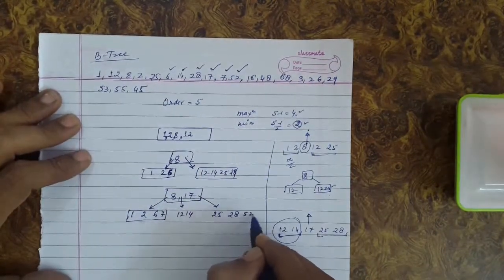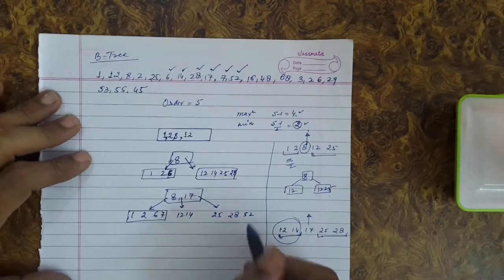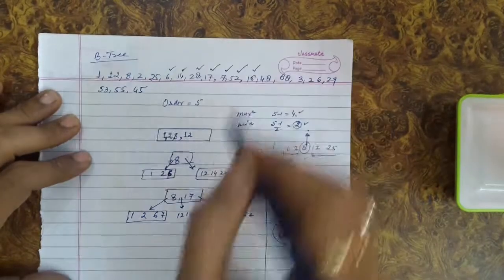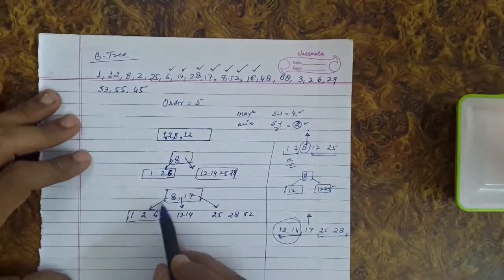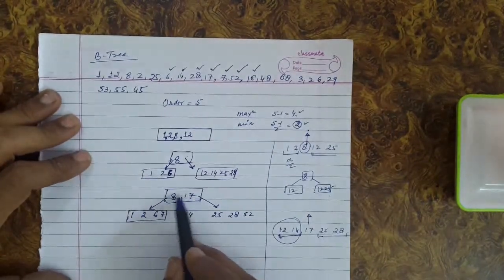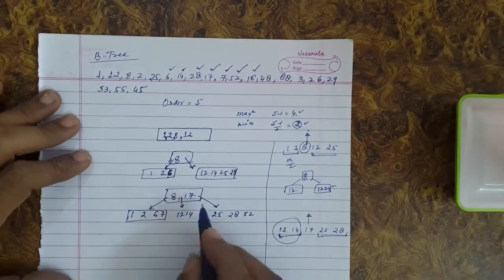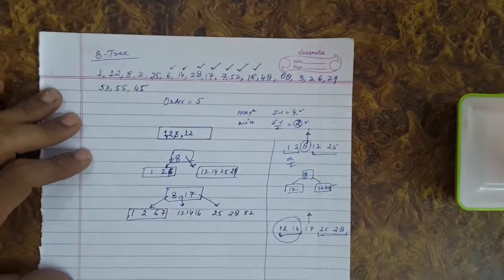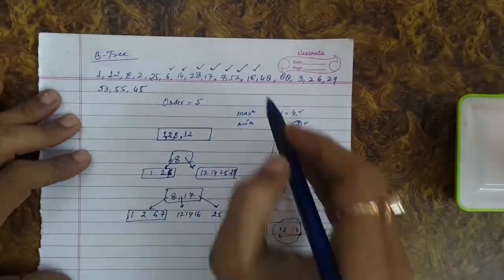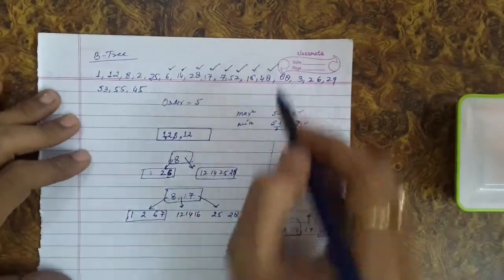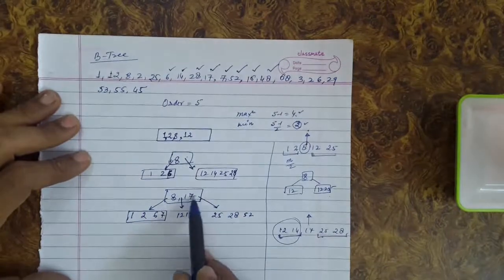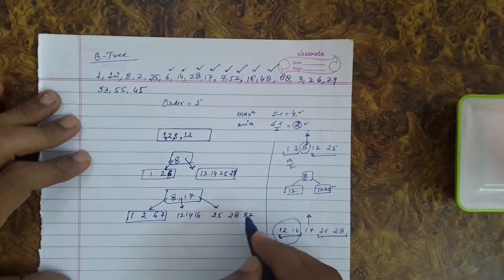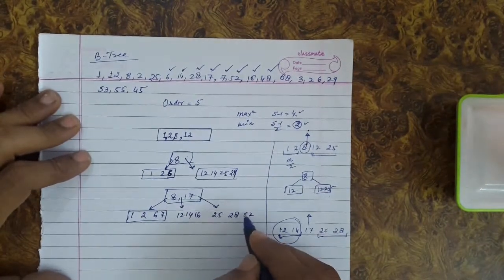Remember that insertion always takes place in the leaf node only. Key 16 falls between 8 and 17, so 16 is inserted into the middle leaf node. Key 48 is greater than 17, so 48 is inserted into the rightmost node.